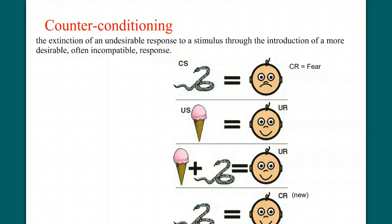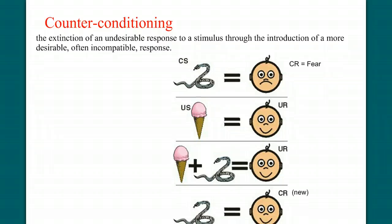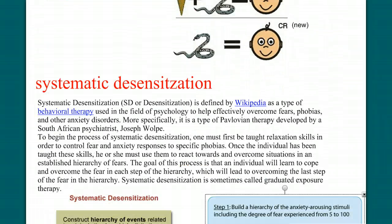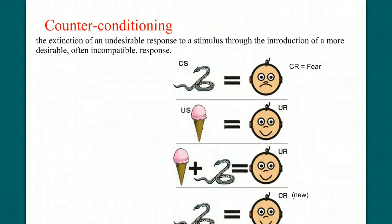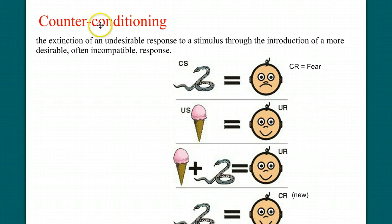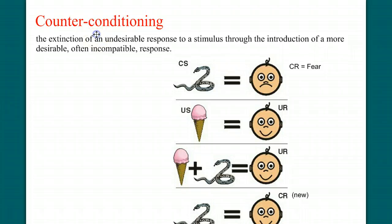Let's move on to the ideas of counter conditioning and systematic desensitization. These are two processes that employ the concepts of classical conditioning in a more clinical approach. Counter conditioning. It is what it says it is. It's the counter or opposite of learning. We're going to unlearn or maybe replace learning with a different type of response. It's the extinction of an undesirable response to a stimulus through the introduction of a more desirable and often incompatible response. So let's look at this situation.